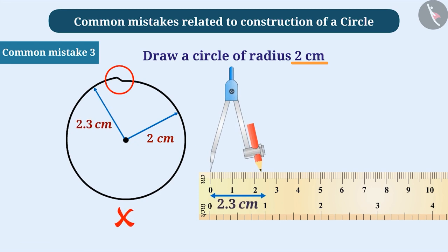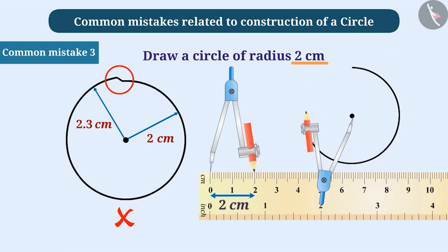Often, this distance changes when rotating the compass. This does not give us the correct circle. Such mistakes can be avoided by maintaining the distances taken in the compass.